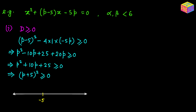Since the factor (p+5) is squared, its multiplicity is even, so the expression remains positive on both sides of the critical point p = −5. This means (p+5)² ≥ 0 for all real p, including p = −5. So the first solution set is p ∈ (−∞, +∞) — p can be any real number.